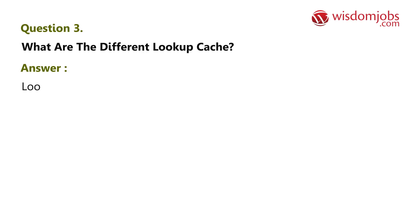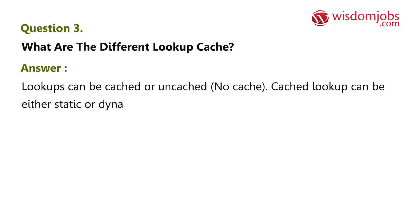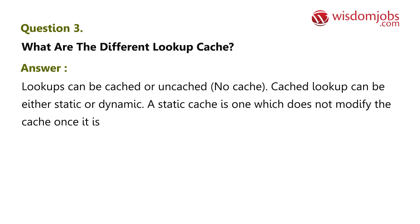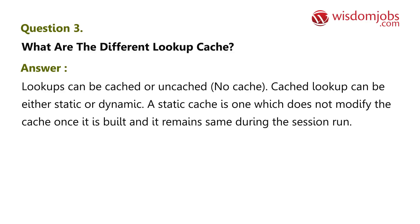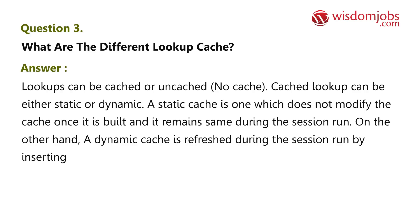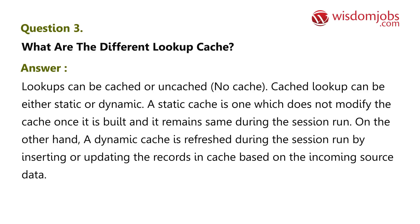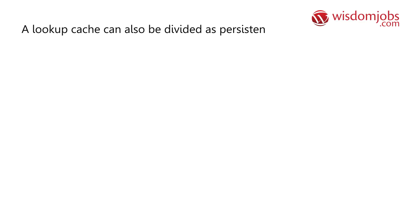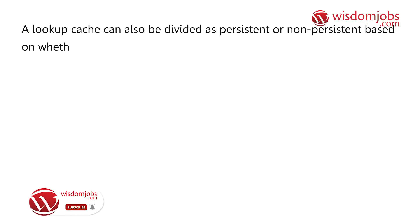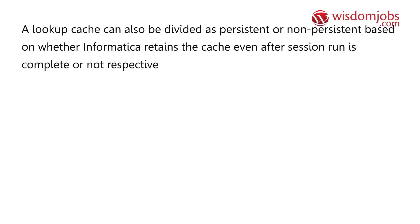Question 3: What are the different lookup cache types? Answer: Lookups can be cached or uncached. A cached lookup can be either static or dynamic. A static cache is one which does not modify the cache once it is built and it remains the same during the session run. A dynamic cache is refreshed during the session run by inserting or updating records in the cache based on the incoming source data. A lookup cache can also be divided as persistent or non-persistent, based on whether Informatica retains the cache after the session run is complete or not.